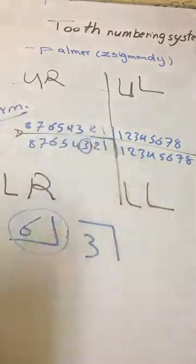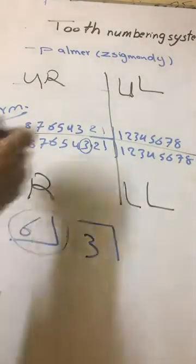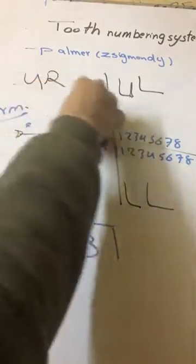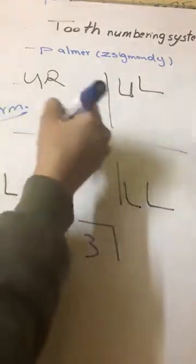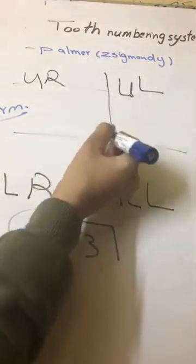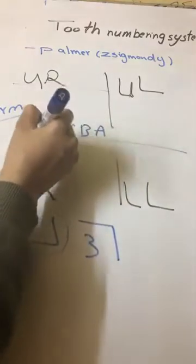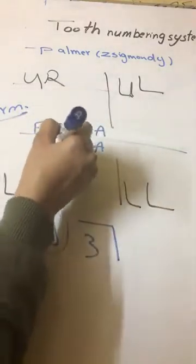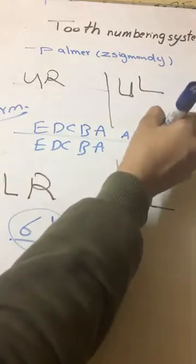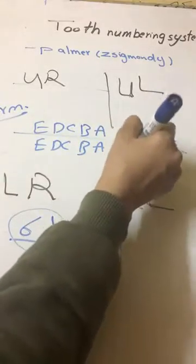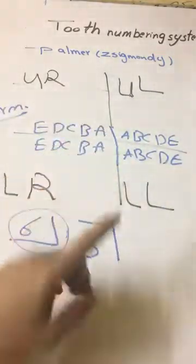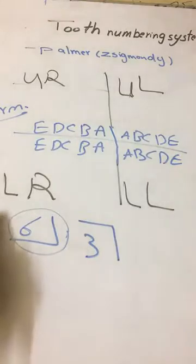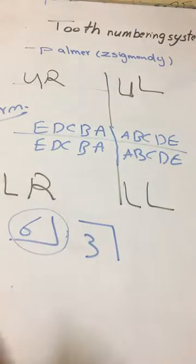For the deciduous teeth, it is the same but will change the numbers into letters, from A to E in each quadrant. The same, upper right, lower left, lower right, lower left.